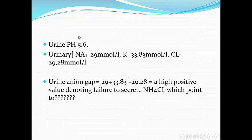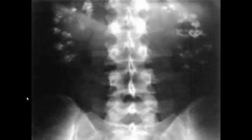Urine pH is 5.6 — going with renal tubular acidosis. Urine anion gap: urine sodium 29 plus potassium 33 minus chloride 29 equals a highly positive value, denoting failure to secrete ammonium chloride, which points to renal tubular acidosis. This patient has Sjögren's syndrome, which is one of the causes of RTA. Nephrocalcinosis is also present, consistent with Type 1 RTA.